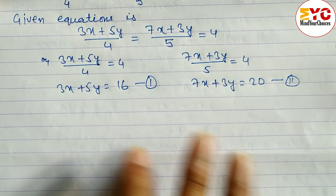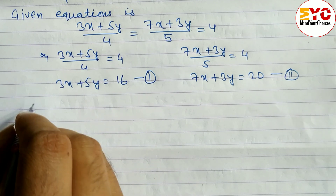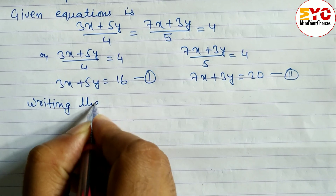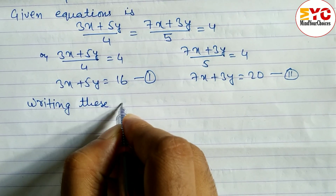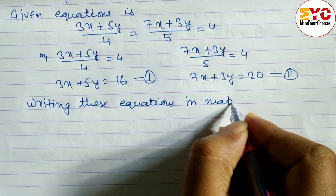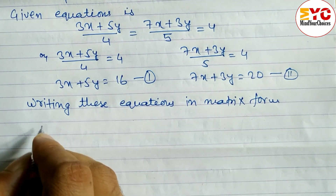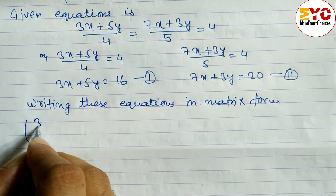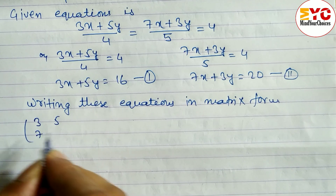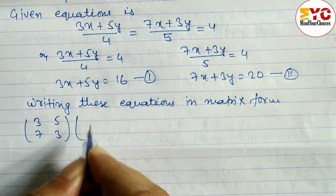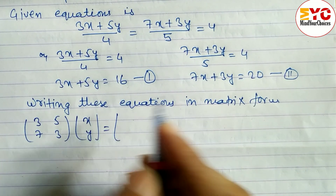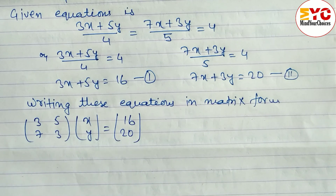Now we have two equations and we have to solve them using the matrix method. First, we write them in matrix form. The coefficient of x is 3, coefficient of y is 5 for the first row, and 7 and 3 for the second row. Then we write x and y as the variable matrix, equal to the column matrix 16 and 20.